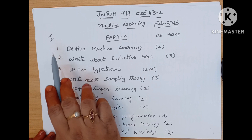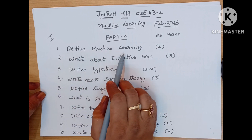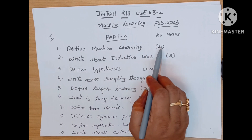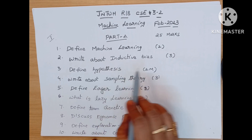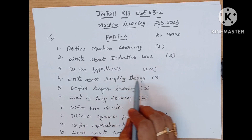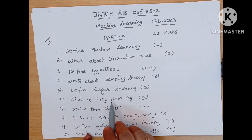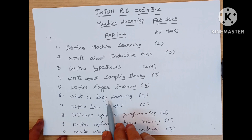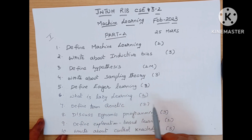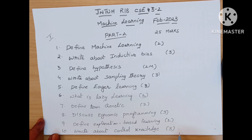Part A, first question — that means section 1 — has 2 to 8 bits. First one is define machine learning, a 2 marks question. Next, write about inductive bias, 3 marks. Define hypothesis, 2 marks. Write about sampling theory, 3 marks. Define eager learning, 2 marks. What is lazy learning, 3 marks? These two belong to the same concept — different types of learning: eager learning and lazy learning. Next, define the term genetic, 2 marks. Discuss dynamic programming, 3 marks. Define explanation based learning, 2 marks. And write about control knowledge, 3 marks.